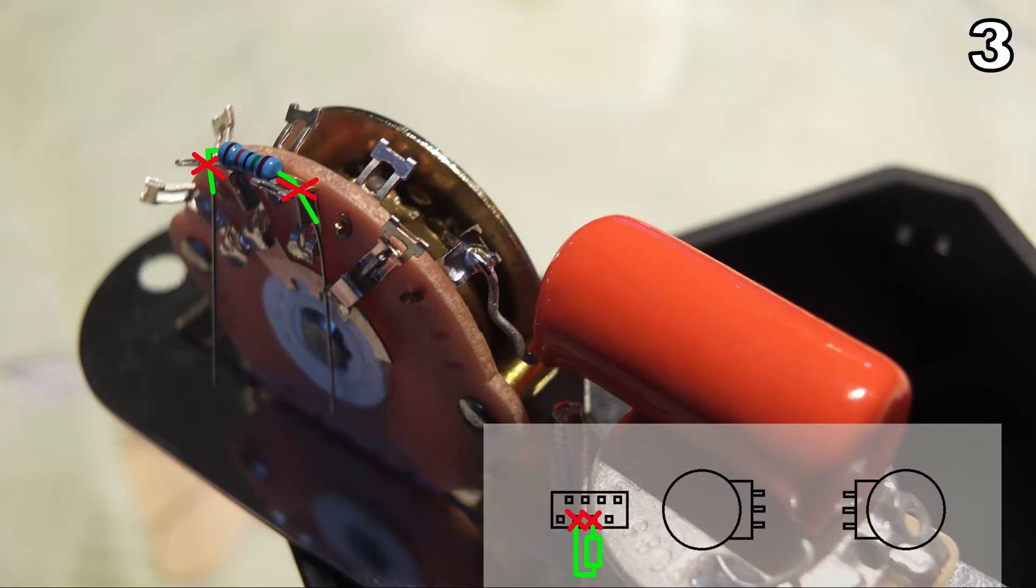Step number three is just preparing the resistor. It's bridging the two middle pins on the bottom row of the three-way switch. Don't solder it yet. There are other wires that are also connected to these pins. Just bend it into shape and shorten the legs.